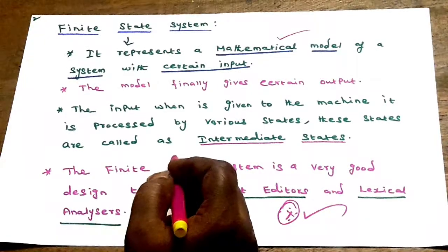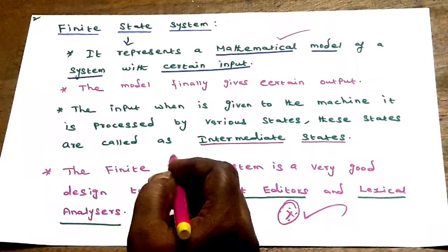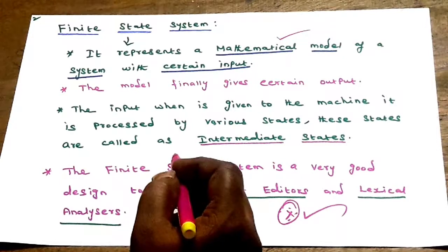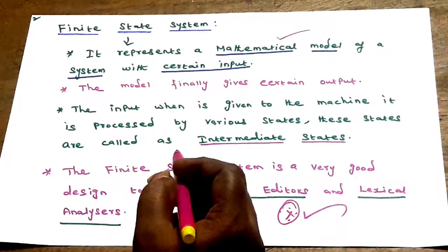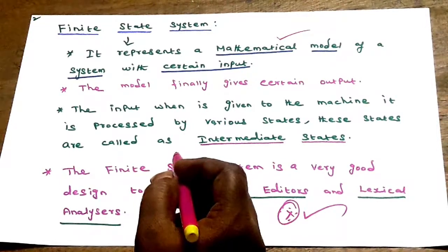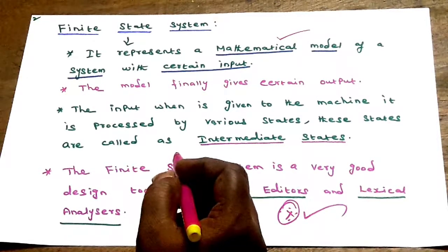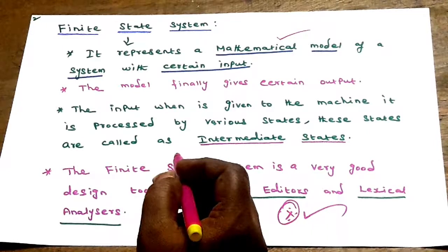Topics like automata theory, graph theory, discrete structures, and artificial intelligence — in these topics, we will get easy answers and mark the score. We will understand the questions.